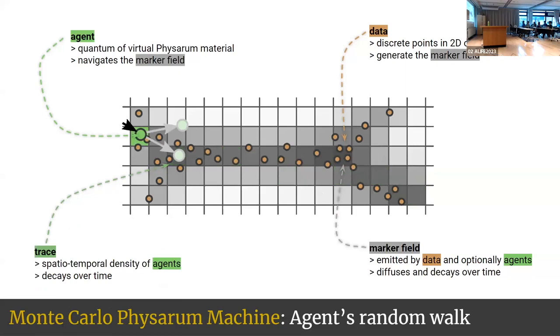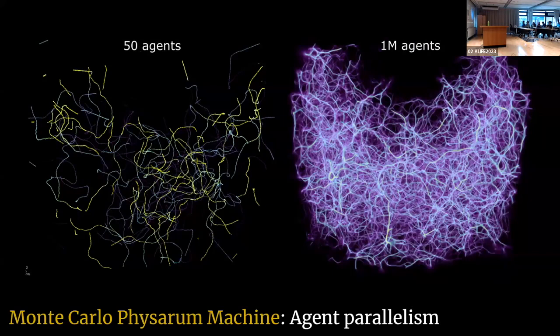The agents leave something called trace, which you can think of as a spatiotemporal histogram of agents flowing through space — and that's basically the solution to the reconstruction problem. That's our network. If you run just 50 agents, you get squiggly random spaghetti. But if you have 1 million agents, they actually converge to a stable equilibrium — a three-dimensional scalar field that represents the density of the agents and can be used as a proxy for a network, like the cosmic web.